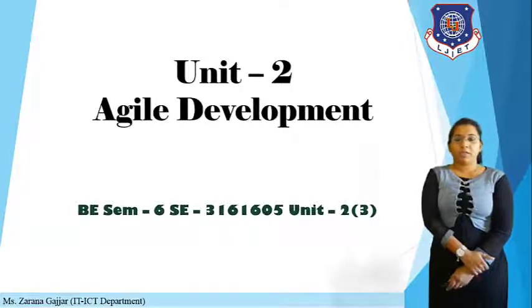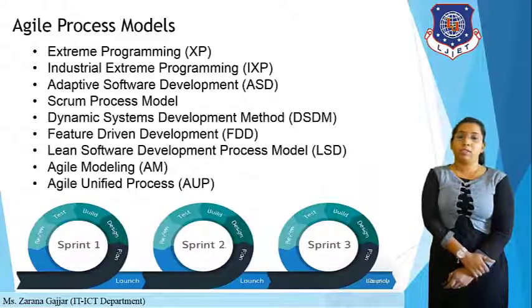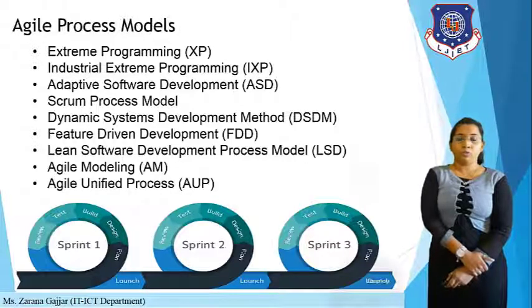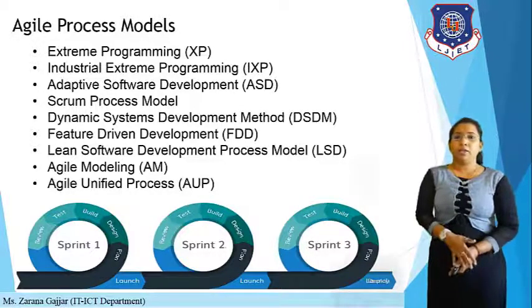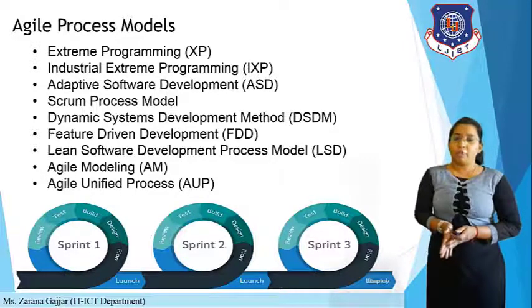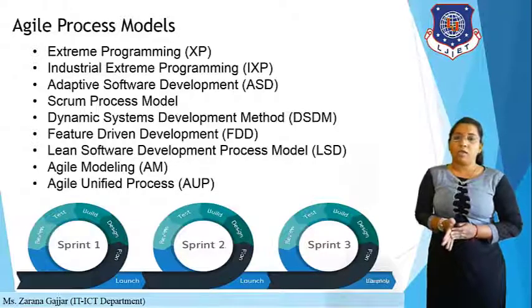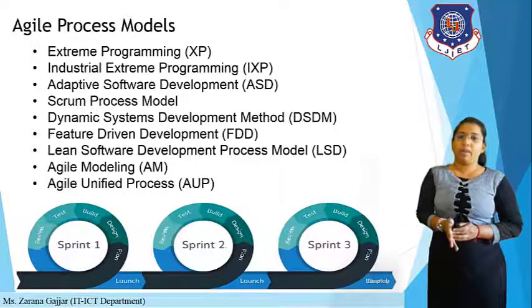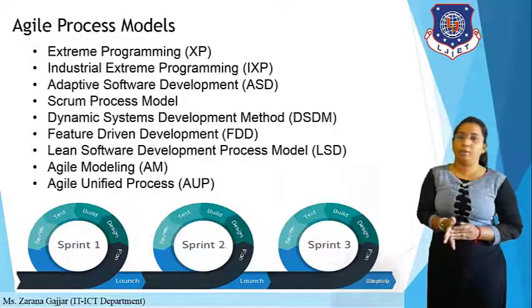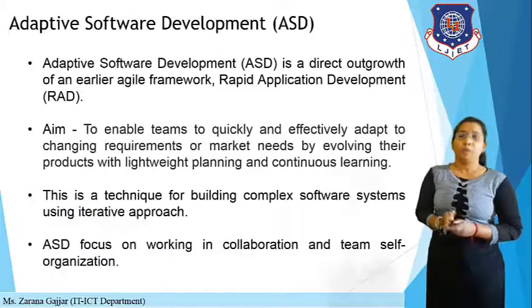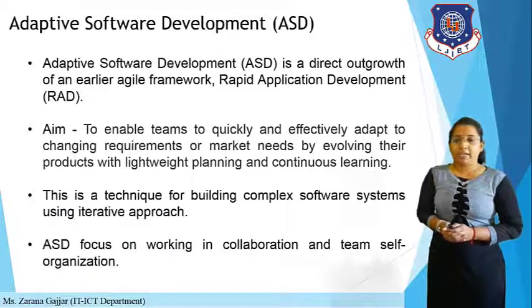In the previous lecture, we learned about various agile process models, in which we discussed extreme programming and industrial extreme programming. Now in today's lecture, we will continue with the agile process models and learn another two agile process models: ASD, that is Adaptive Software Development, and second is DSDM, that is Dynamic System Development Method. Let's start with the ASD model.